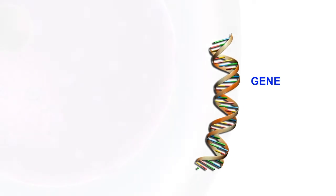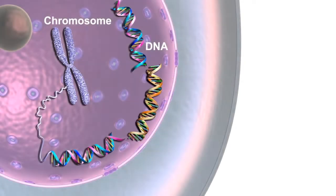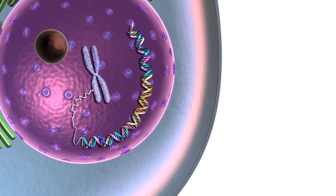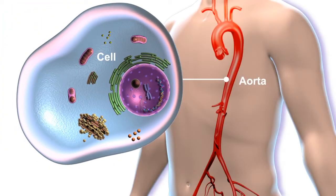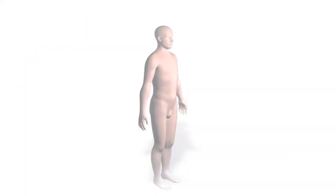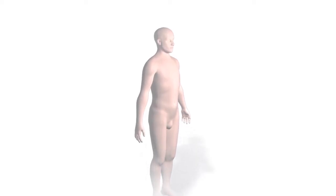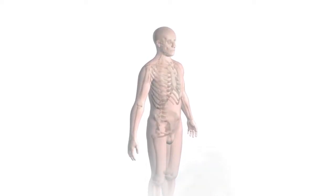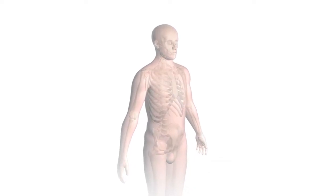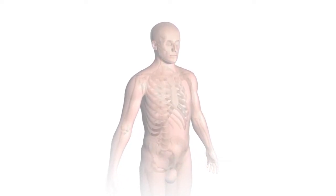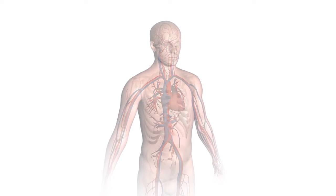Genes are the instruction code of our bodies. Changes or mutations in this instruction code increase the risk for disease. More than 20 genes are known to be involved in hereditary thoracic aortic diseases. People who have certain genetic changes have a higher risk for disease, regardless of other risk factors. For instance, some people with genetic causes for aortic disease have connective tissue diseases, such as Marfan syndrome.